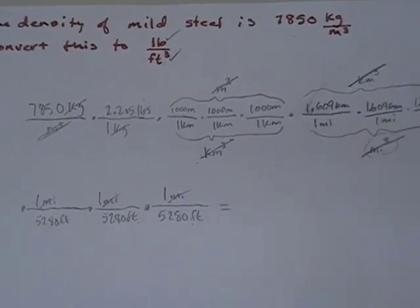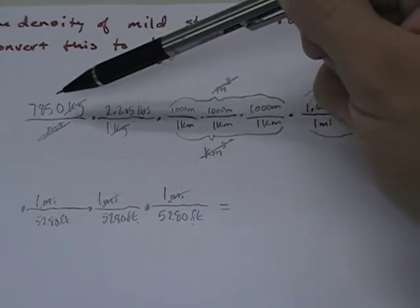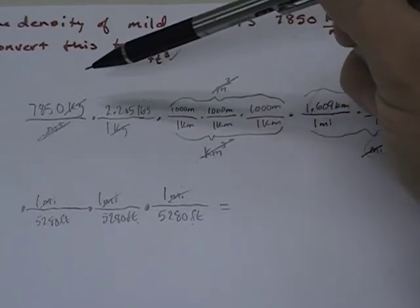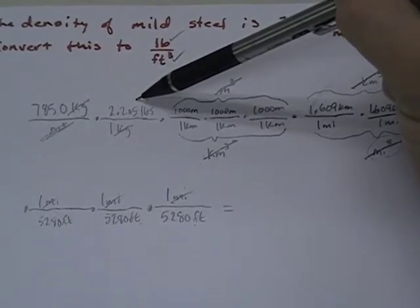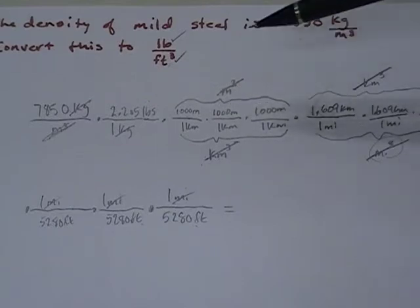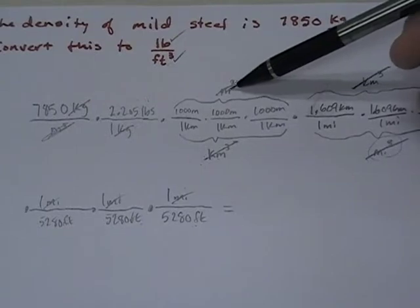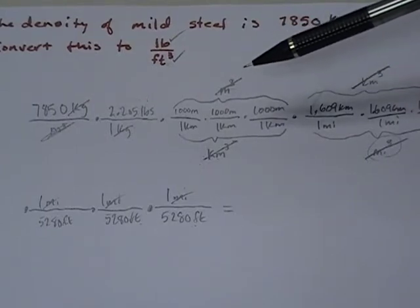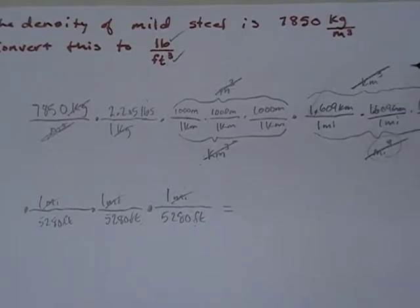So now, ta-da, I do the math. And when I do the math, I'm going to show you how I type this in. I'm going to say 7850 times 2.205 times 1000 times 1000 times 1000, or you can say times 1000 cubed. That's up to you. And at this point, I have a massive number. It's humongous.